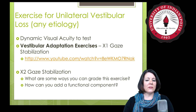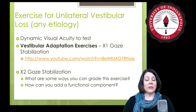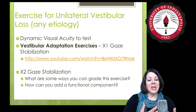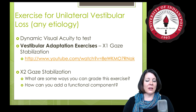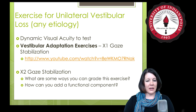For any kind of unilateral vestibular loss — whether labyrinthitis, vestibuloneuronitis, or a severed vestibular nerve from tumor resection — we can use dynamic visual acuity to test, and then use vestibular adaptation exercises to improve. These are also called times one gaze stabilization or gaze stability exercises. There is also a times two version: times one gets a gain of one, where the eyes and head stay on the target as the head moves, but the target does not.